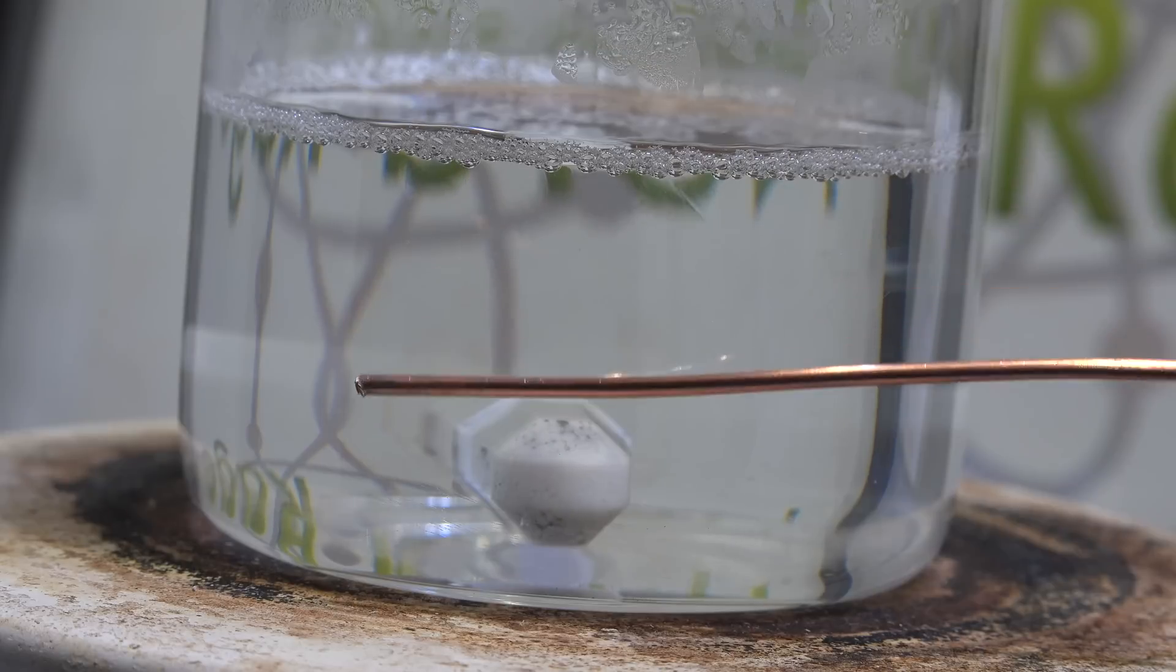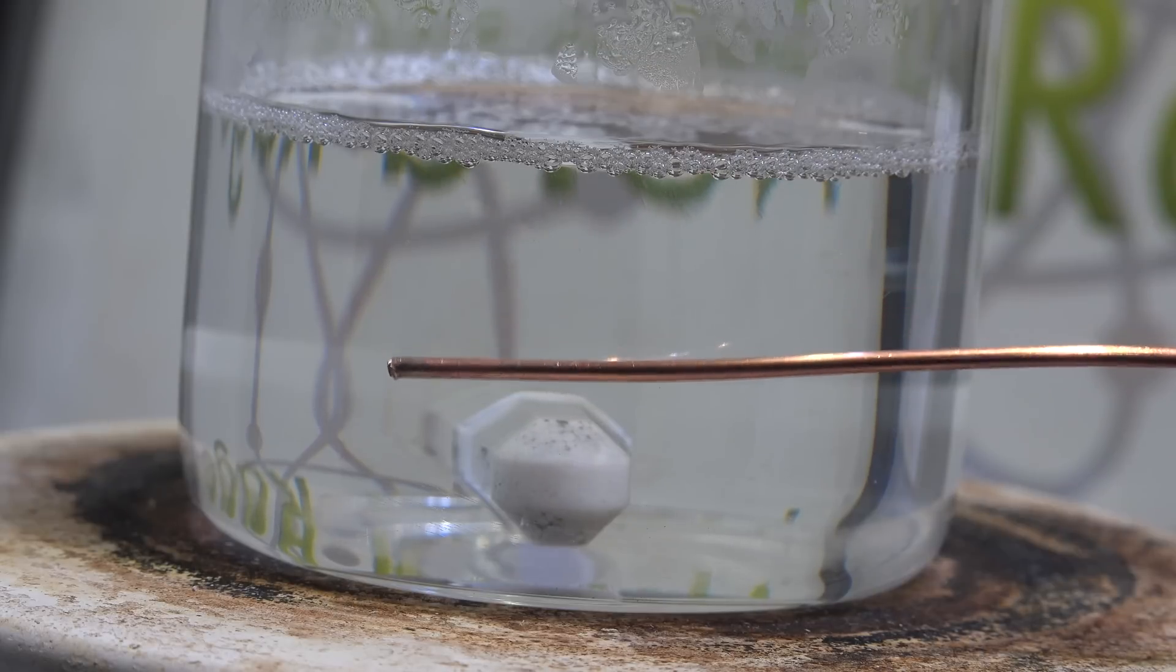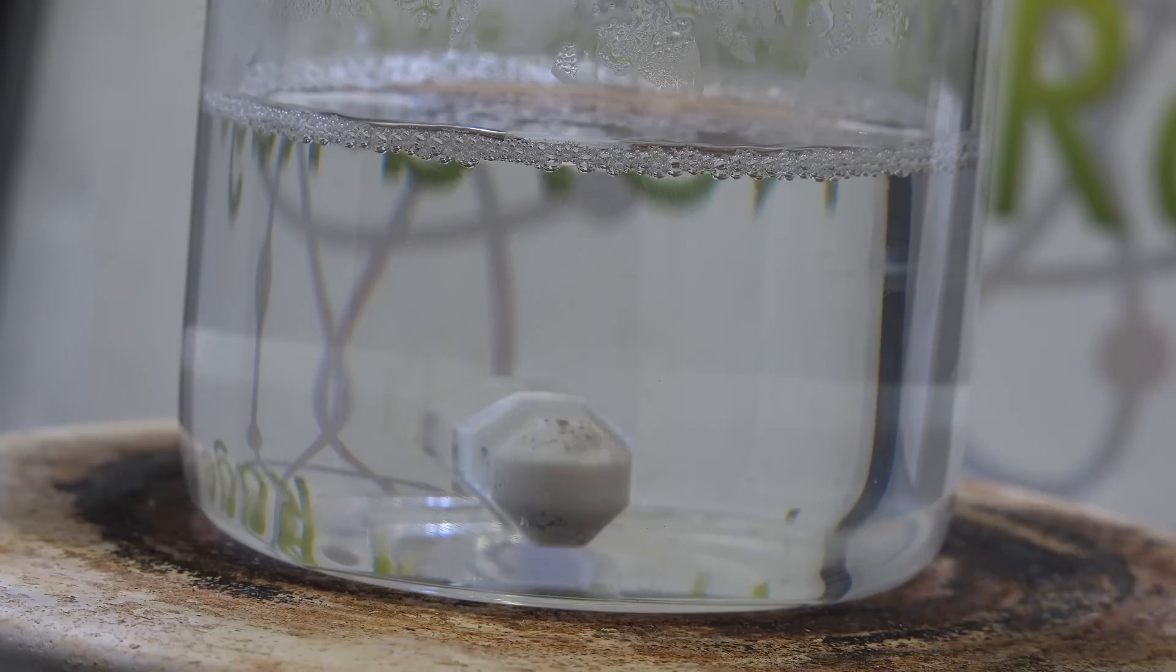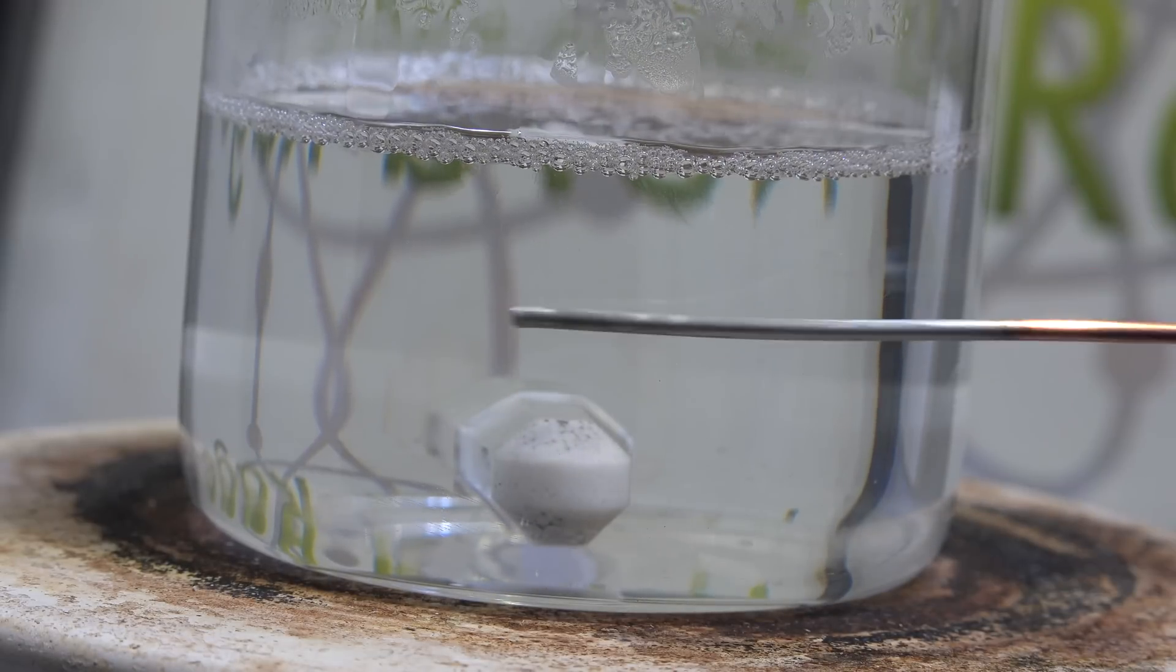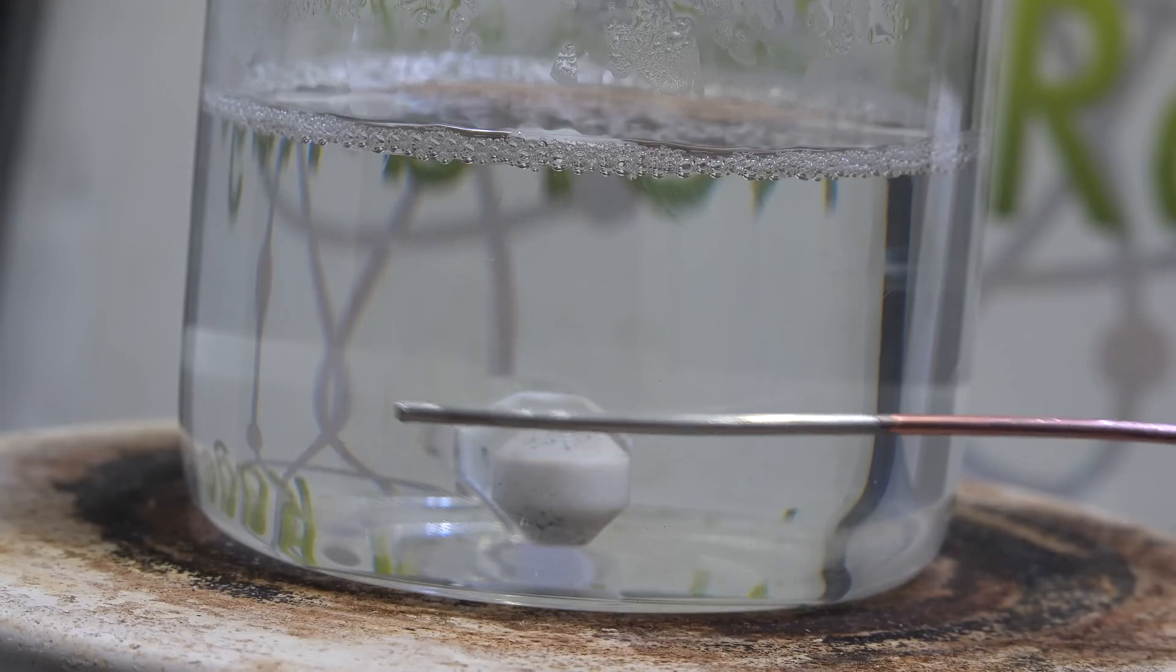Now for the fun part we put in some copper. I'm going to put in this copper wire. Now remember before that tin did not plate onto copper from tin chloride. However we now have a nice smooth layer of tin.